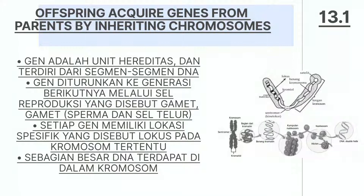Orang tua mewariskan gen kepada keturunannya. Gen merupakan unit hereditas yang terdiri dari segmen-segmen DNA. Sebagian besar DNA terdapat di dalam kromosom. Gen diturunkan ke generasi berikutnya melalui reproduksi yang disebut gamet. Gamet merupakan hasil fertilisasi dari sel sperma dengan sel telur. Setiap gen memiliki lokasi spesifik yang disebut lokus pada kromosom.